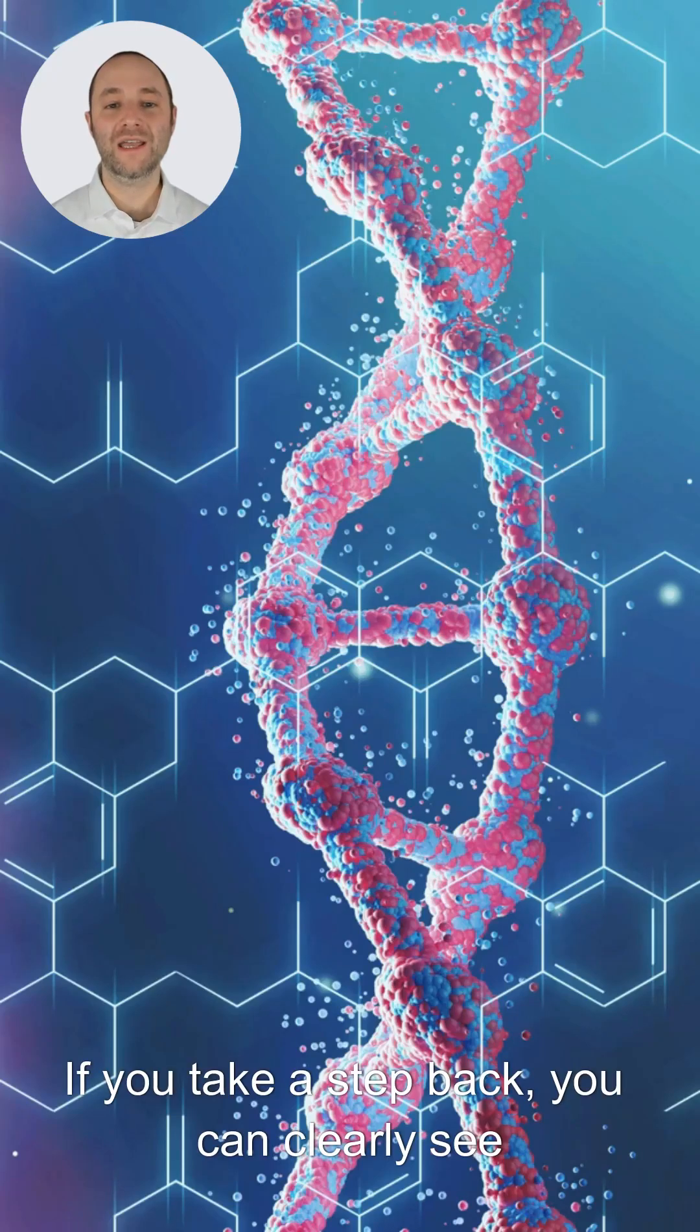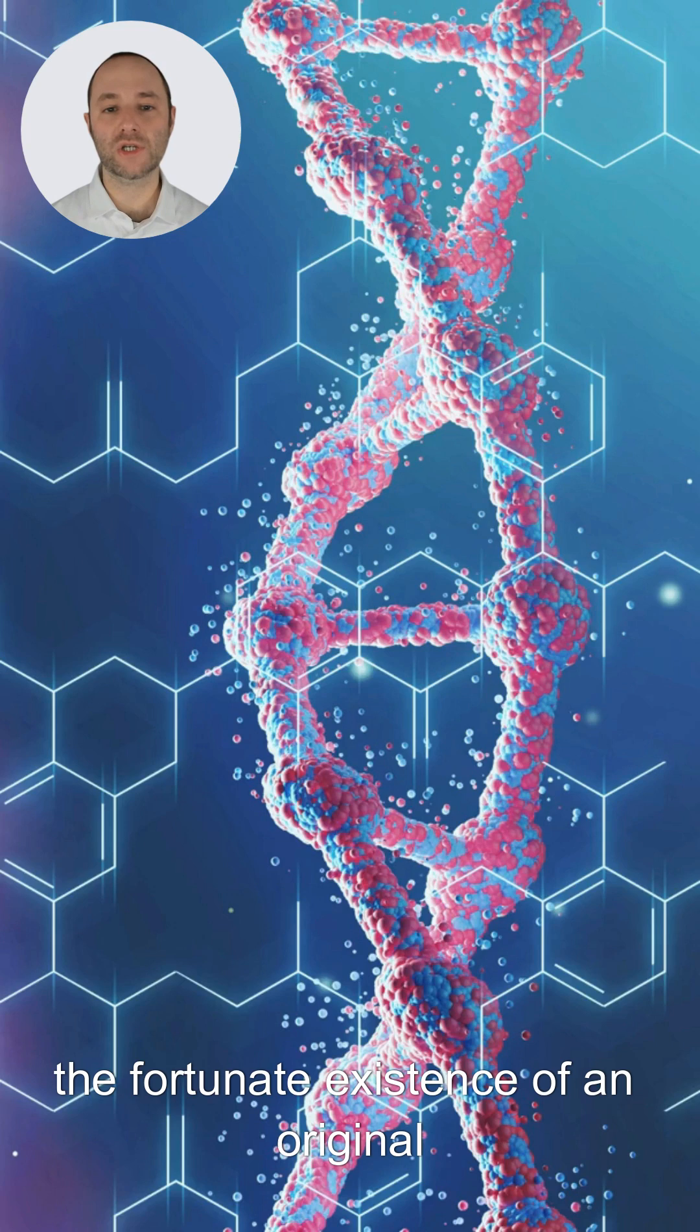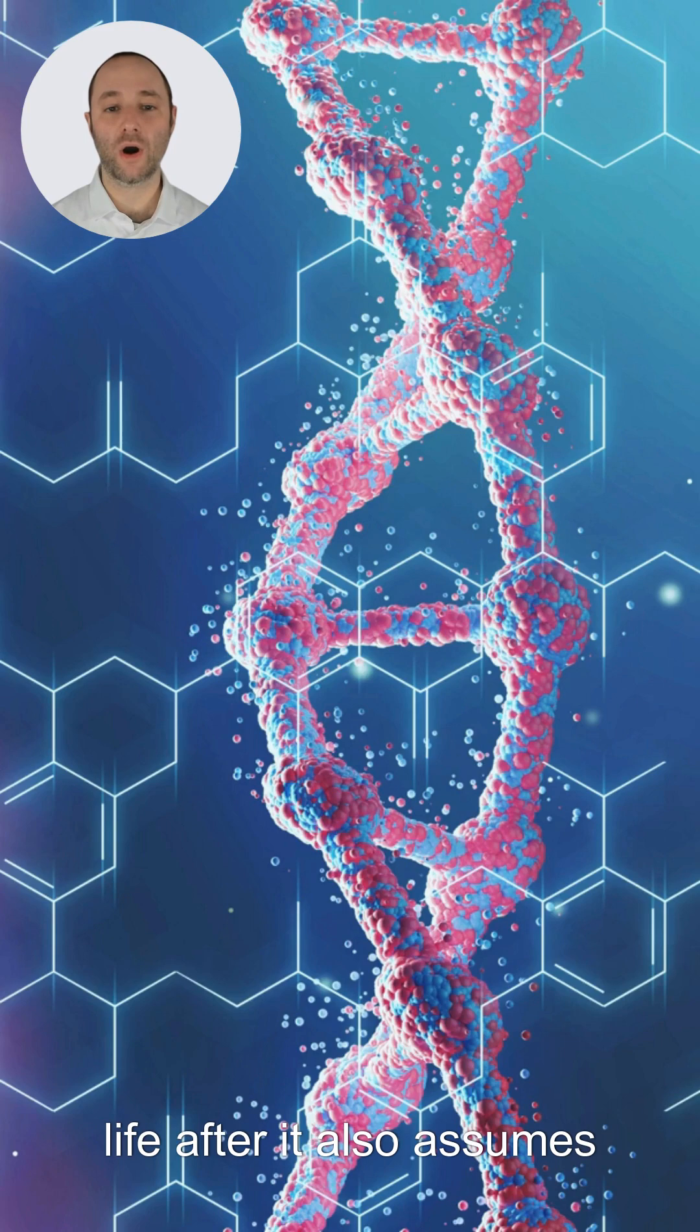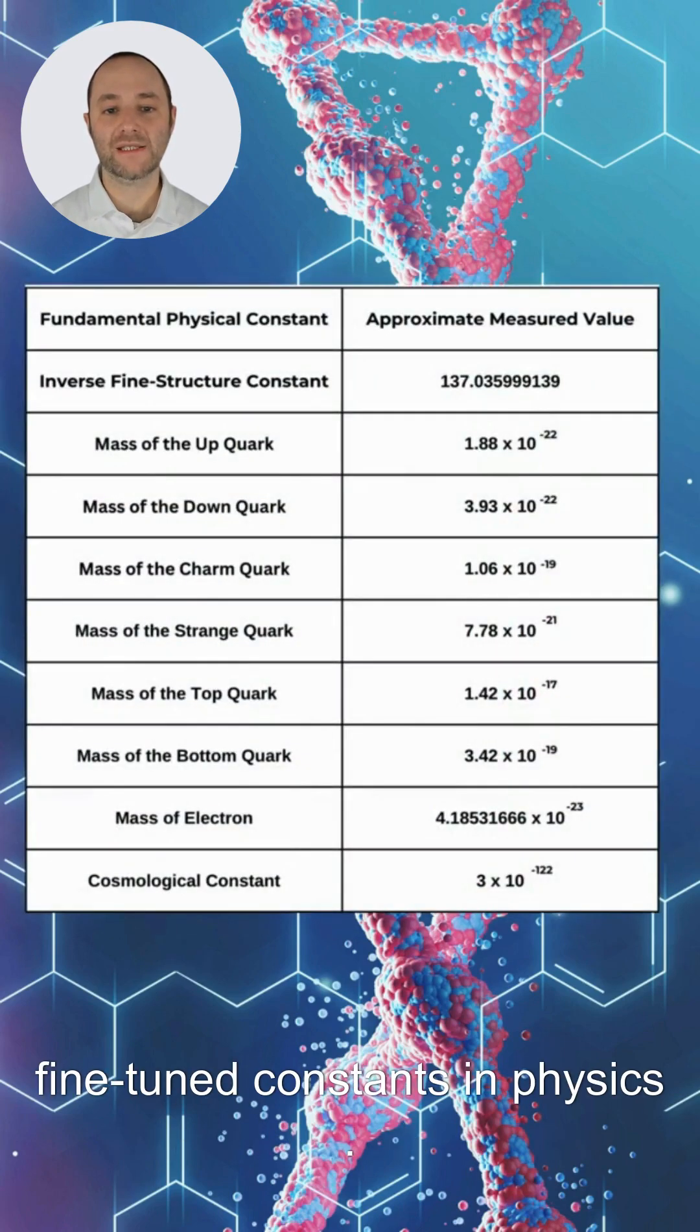If you take a step back, you can clearly see that even if we grant the fortunate existence of an original replicator through the multi-planet solution, the theory of evolution can only explain life after it also assumes the prior existence of the properly fine-tuned constants in physics.